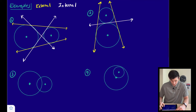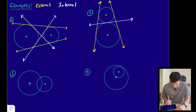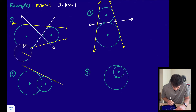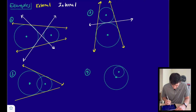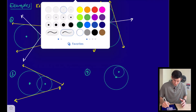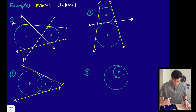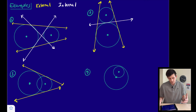For our third example, we can still draw two external tangents. However, when we think about drawing an internal tangent, we can't — there is no valid line that would serve as an internal tangent here. So in this case there are no internal tangents; we only have two external tangents.